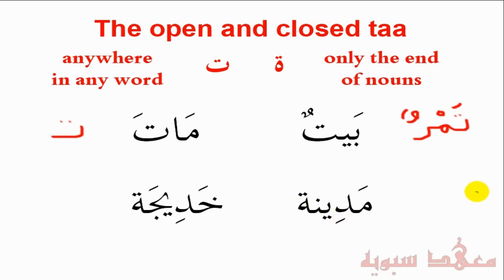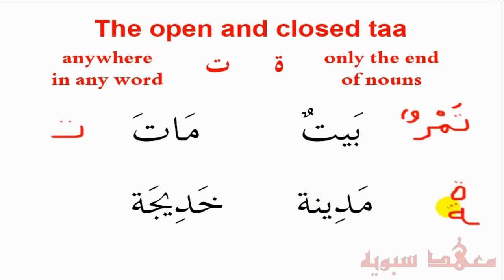If it doesn't join to the second-last letter, it will be written on its own like this. Or if it's connected to the second-last letter, it's written like this. The difference between the hā' and the tā' marbūṭa is just the two dots at the top — so they're both tā' marbūṭas now. The hā' also has the medial form, which is that. But we said the tā' marbūṭa can never be in the middle of a word — it's always at the end — so you won't find a tā' marbūṭa in that form; that doesn't occur.